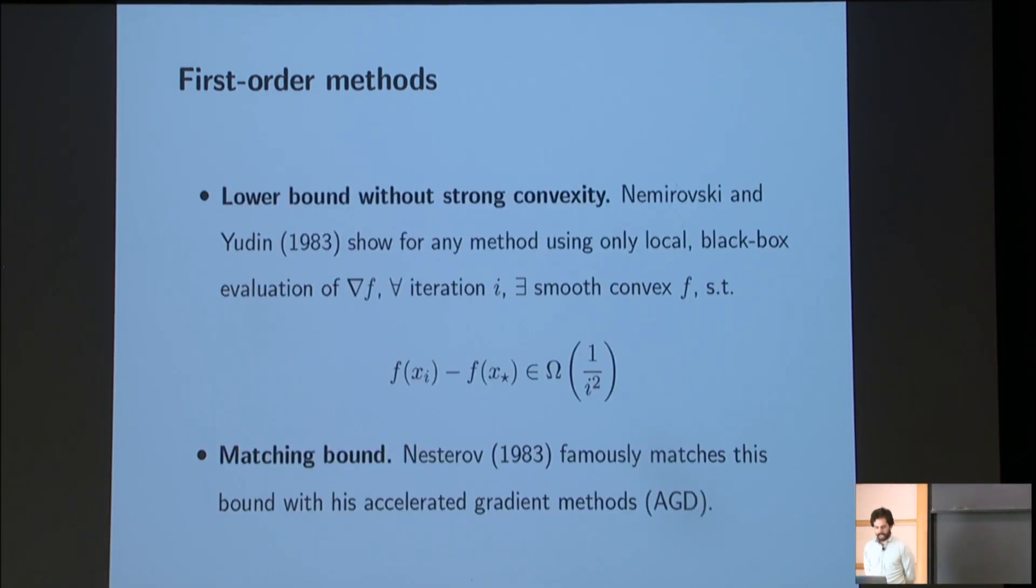So in 1983, Nemirovsky and Yudin famously showed the following kind of lower bound. So they showed that for any method that uses only the local and black box evaluation of the gradient map of f, and obviously the whole meat of the idea is held in those two concepts of local and black box, which I won't really unpack. But the essence is that you can't really constrain the class of functions that you can expect your algorithm to be exposed to on any information other than this local evaluation of the gradient map at the points you visited. And for any such method, which includes gradient descent, and for any iteration counter i, there exists a smooth convex function such that the gap to the minimum in the function's value is lower bounded by something that's shrinking like 1 over i squared.